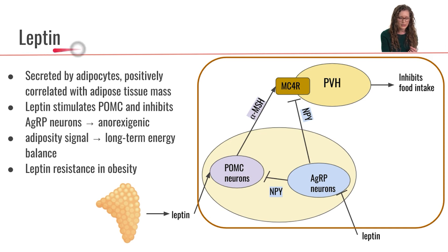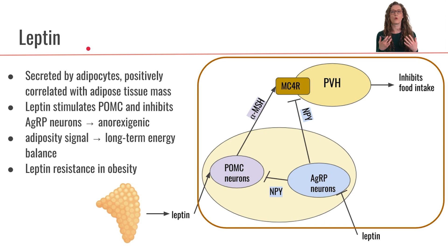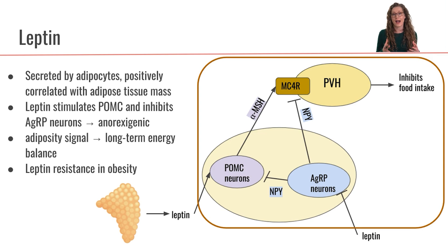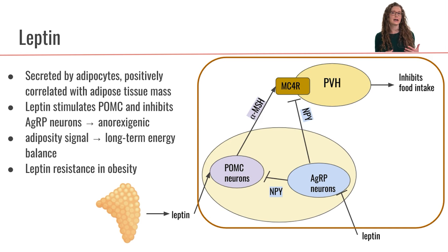So this is the hormone leptin. Leptin is secreted by adipocytes, and we secrete more leptin in relation to the total adipose tissue mass. If you have a larger adipose tissue mass, you'll secrete more leptin. The size of your adipose tissue mass is a reflection of how much energy you have stored as fat, so more leptin secretion reflects a higher level of energy stores. In turn, leptin helps tell our brain that we have enough energy and don't need to eat more food.